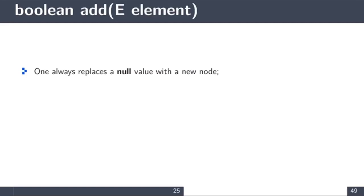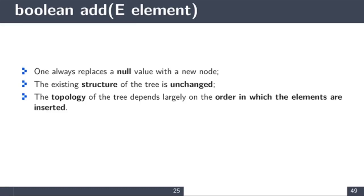We always replace a null value with a new node, and the structure of the existing tree is unchanged by insertions. However, there is no guarantee that the resulting tree will be balanced or complete — the topology depends entirely on the order elements are inserted. In a future data structures course, you'll see auto-balanced trees called AVL trees, which maintain the balanced property during insertions. In ITI 1121, we will not address balancing and let the tree be as it is.